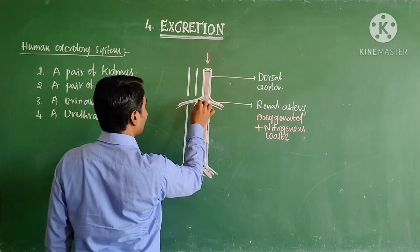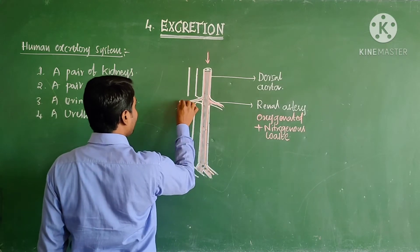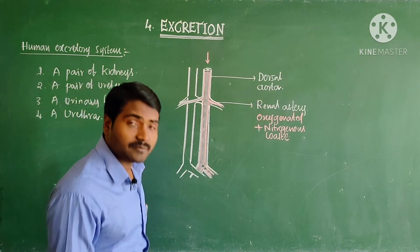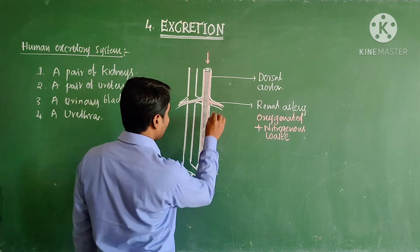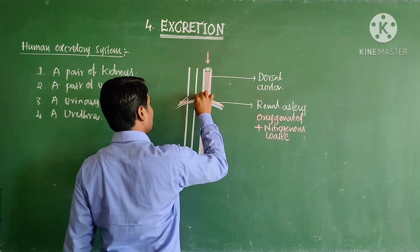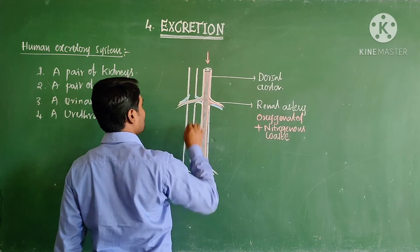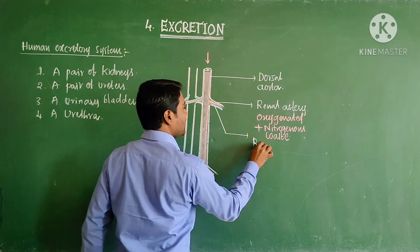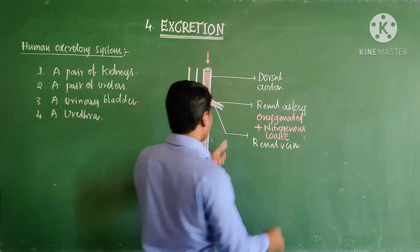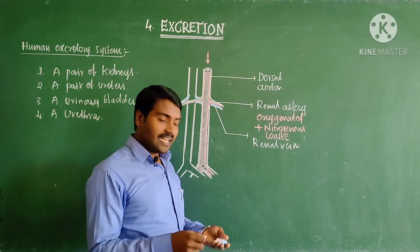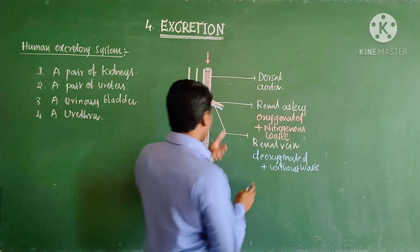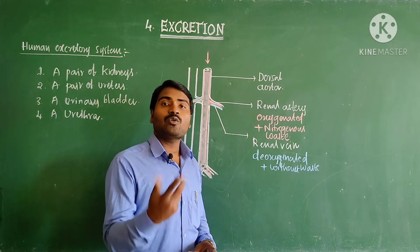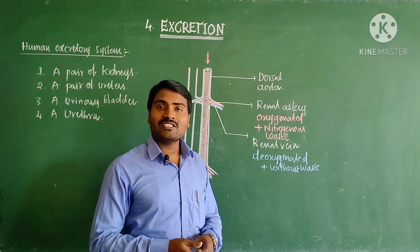From the kidney a vein arises that goes on to become a major vein. This vein is called the renal vein. So this renal vein is collecting deoxygenated blood without nitrogenous waste materials from the kidney. Then where do those nitrogenous waste materials go? We will learn that.